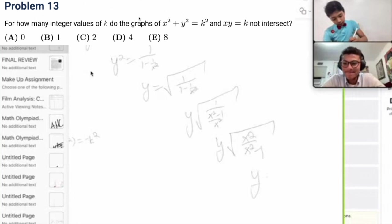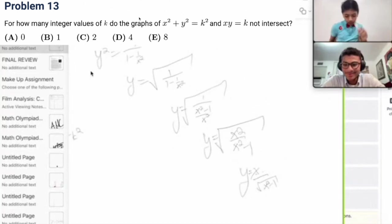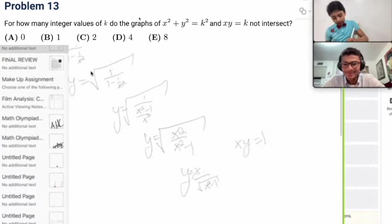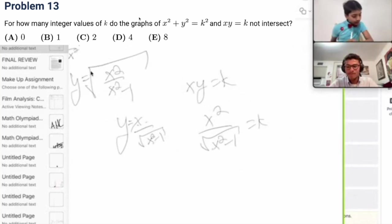Y is the square root of x squared over x squared minus one. So, the y. Oh, wait. Where was I? Oh, yeah. So, y equals x over the square root of x squared minus one. So, x, y is equal to k. So, x squared over the square root of x squared minus one is k. So, when is this not going to intersect? I feel like, honestly, there should be no place where any of these intersect.